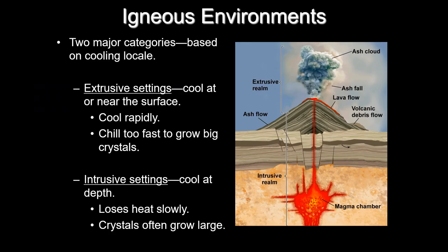These two settings have very different characteristics based on how quickly things cool. Temperature goes up as we go into the Earth, so something extruded on the surface cools very rapidly and crystallizes quickly. Rapid crystallization means there's not enough time to grow very large crystals. In an intrusive environment within the crust, the surrounding wall rock insulates the magma chamber, so heat is lost more slowly, giving crystals longer periods of time to grow into larger forms.